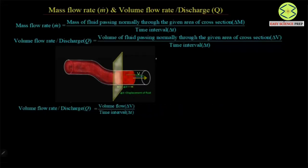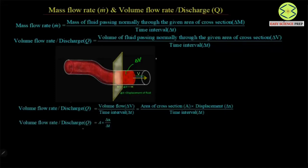The volume of fluid delta v is given by the area of cross section of the pipe multiplied by the displacement of fluid delta x, divided by the time interval. So we get volume flow rate or discharge equal to area multiplied by delta x divided by delta t. Since delta x divided by delta t is the velocity or speed of fluid, the volume flow rate simplifies to area times velocity.